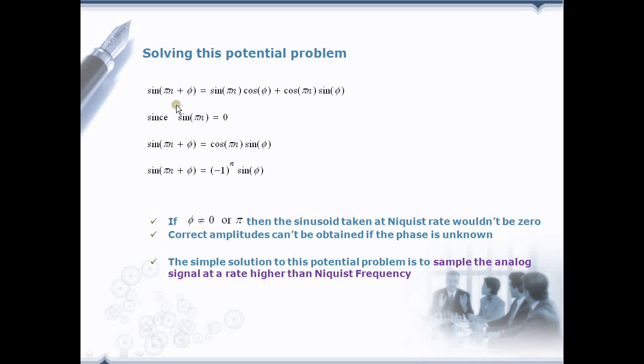One way to solve this problem is to offset the component in phase by some amount phi. Then if we expand it and simplify we get minus 1 power n sin phi. As long as phi is not equal to 0 or pi the samples taken at the Nyquist rate is not all 0.